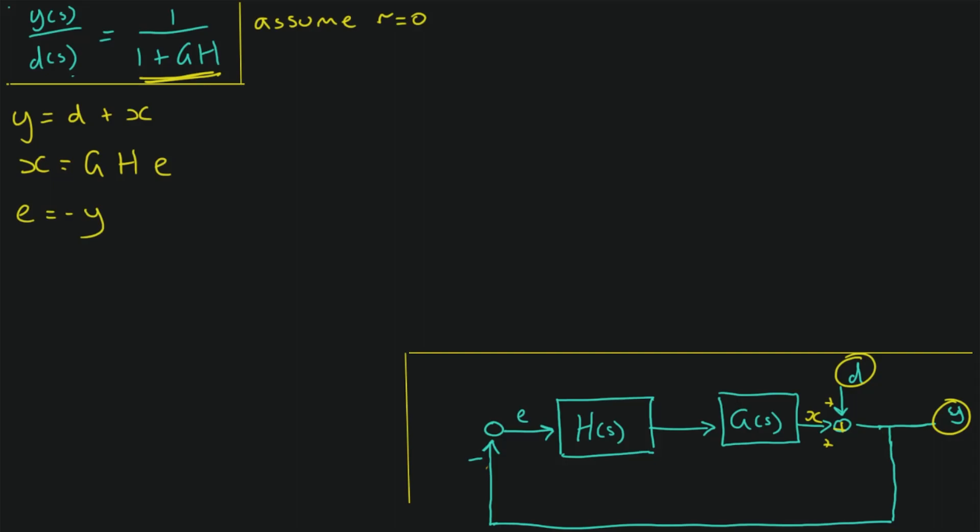So now we just work backwards substituting everything in. So if E is equal to minus Y, then X is equal to GH times minus Y. So we have Y and the minus comes out the front. And then if we substitute that back in to our equation for Y at the top here, we see we have Y is equal to D minus GHY.